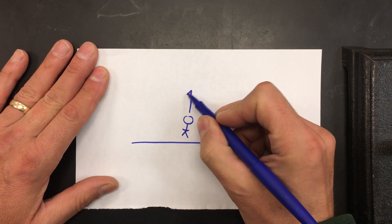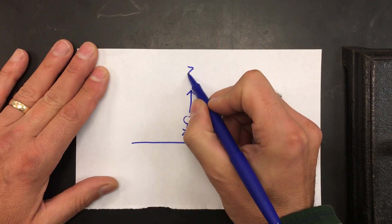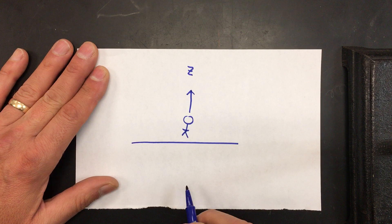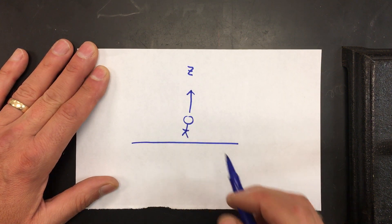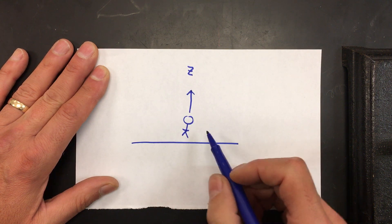So if we have our guy standing on the ground, the zenith would be that point. Now how do we know where in the sky our zenith is when talking about a planisphere?